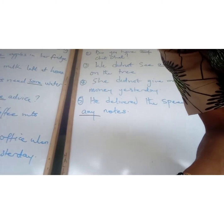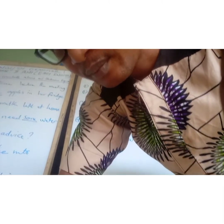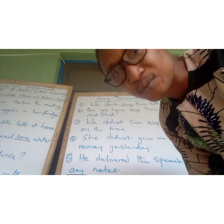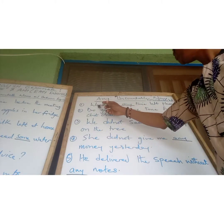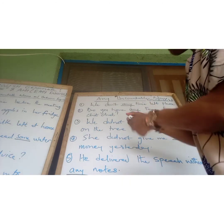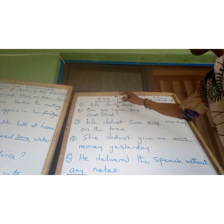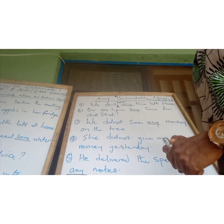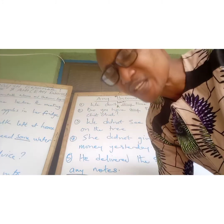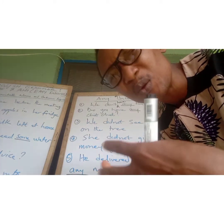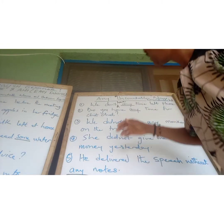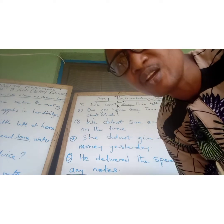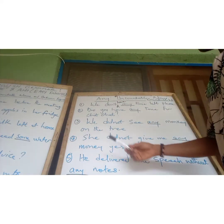Now let's look at 'any.' It is used with both countable and uncountable nouns in a sentence. First example: 'We don't have any time left — the time is against us, let us hasten up.' Next: 'Do you have any time for chit-chat?' — chit-chat is casual talk or office gossip on matters that are not serious. 'Do you have any time for me presently, because I have something serious to discuss with you?'